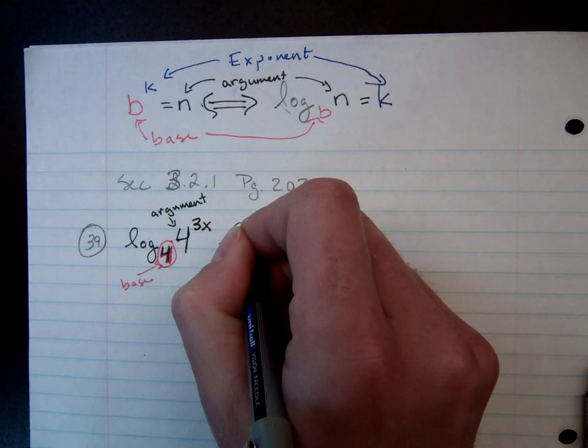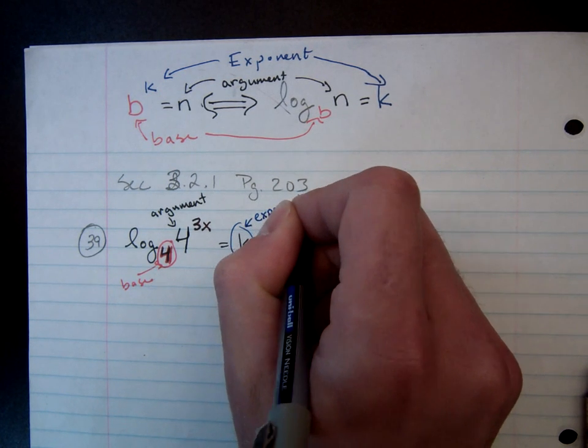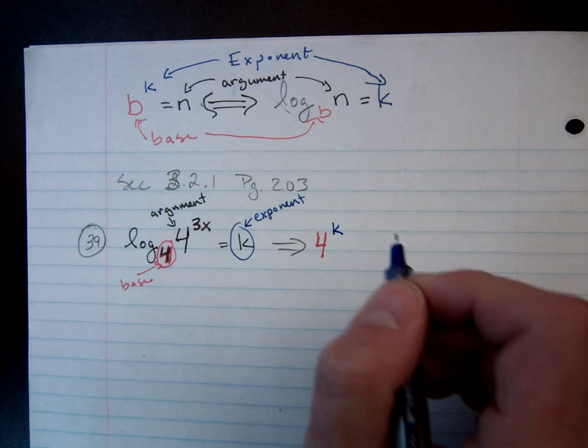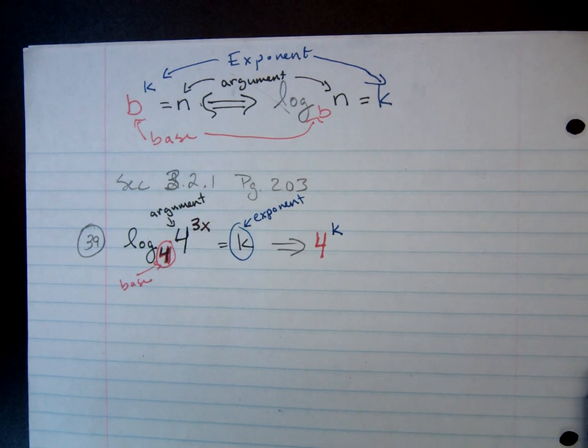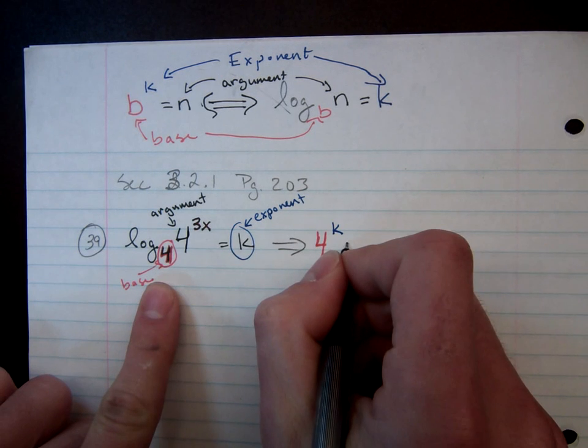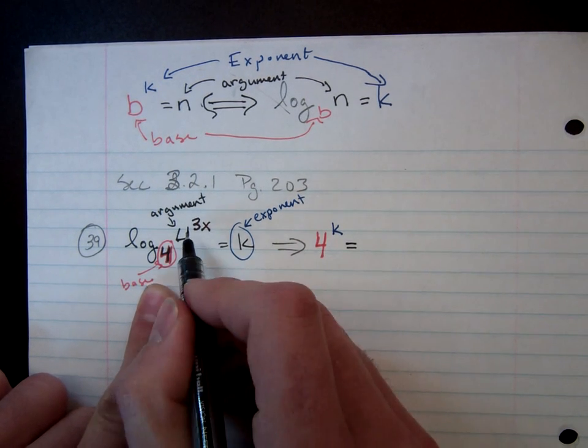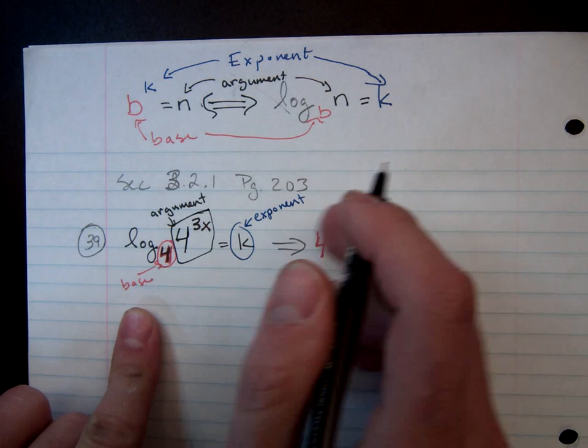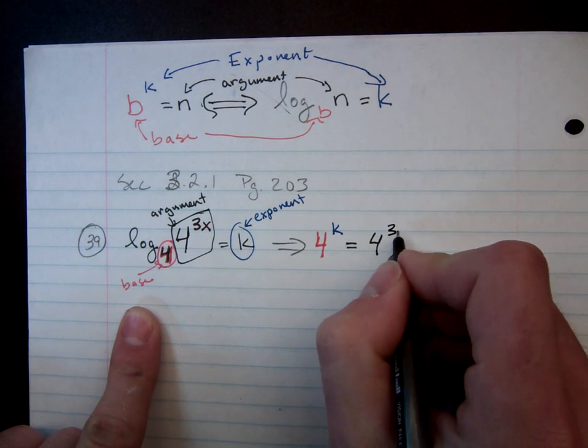Again, this was the exponent k. I don't know what k is, so I'm going to leave k right there. And that is equal to the argument. Well, in this case, the argument we identified as 4 to the 3x.